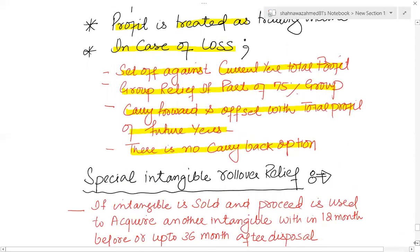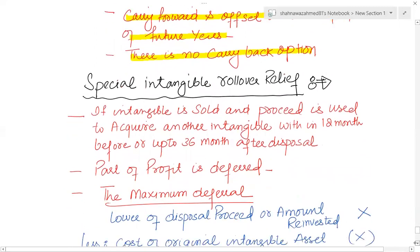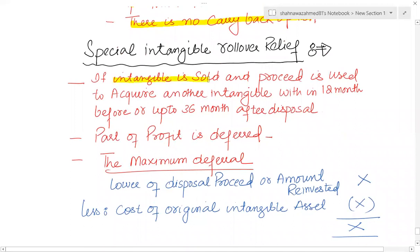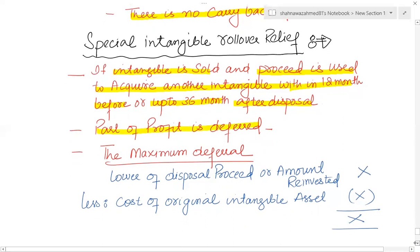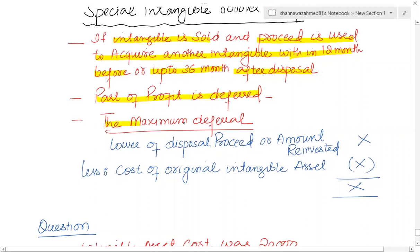For corporation tax there is no carryback option available for a loss on the sale of goodwill. Special intangible rollover relief: if an intangible asset is sold and the proceeds are used to acquire another intangible asset — within 12 months before or up to 36 months after disposal — then part of the profit is deferred. The maximum deferral is the lower of disposal proceeds or amount reinvested, minus the cost of the original intangible asset.